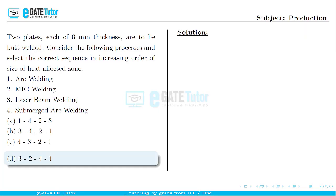This is a question from production for one mark. Two plates, each of 6mm thickness, are to be butt welded. Consider the following processes and select the correct sequence in increasing order of size of heat affected zone.